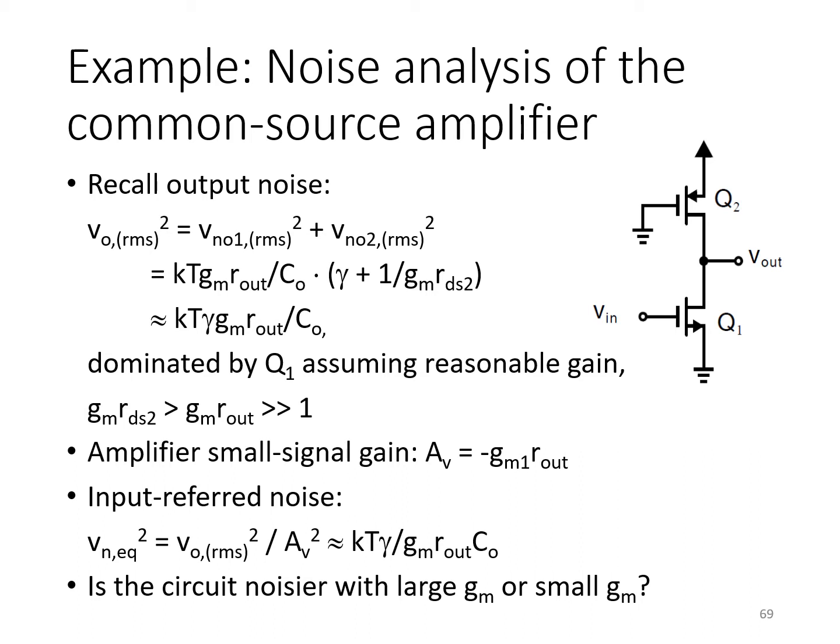We consider the case shown here with an NMOS common source transistor Q1 in active mode and Q2 serving as a load biased in triode, its gate pulled down to ground. You may recall there were two noise contributors we considered when we did this analysis. We assumed the amplifier was quite broadband so that thermal noise is dominant and we therefore neglect flicker noise, 1 over f noise.